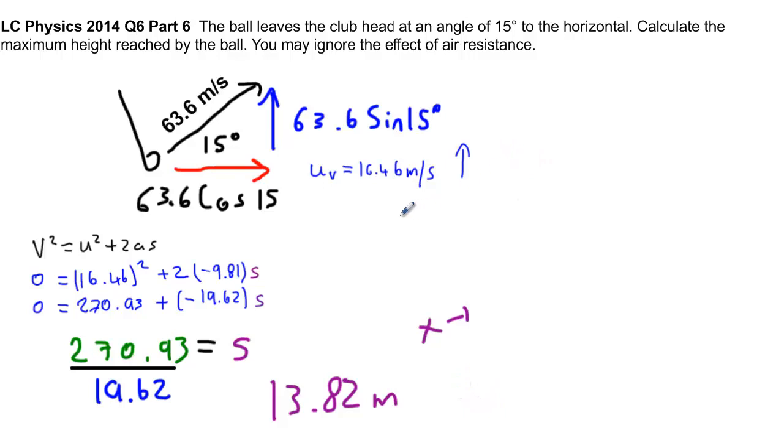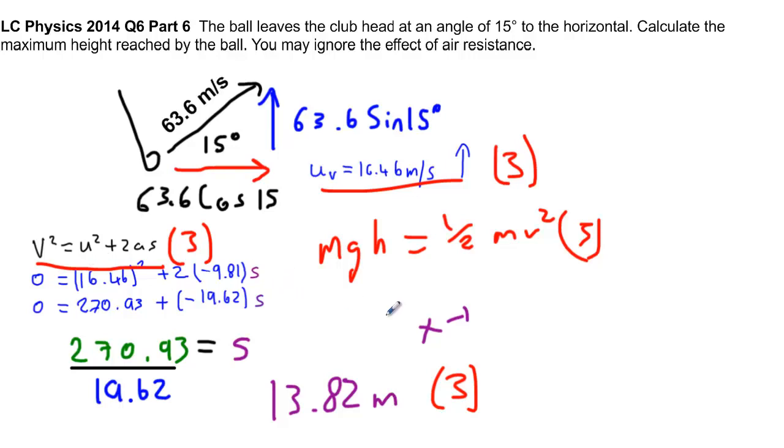So the marks here are going for this vertical velocity. That will get you three. If you get this formula here, if you remember that, that will get you three marks. And the answer is three. You'll also get three marks, by the way, if you have that other one. The mgh is equal to kinetic energy, a half mv squared. So potential energy equals kinetic energy. That would also get you three instead of the V squared equals U squared plus 2as. It's either or in this case. You get three. So it's just nine marks in total.